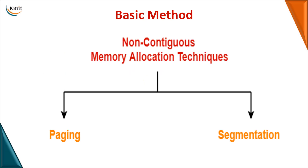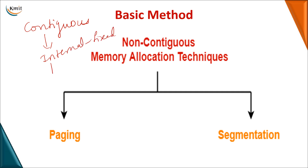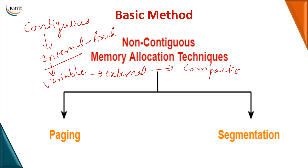In the previous session we covered contiguous memory allocation, which had a problem of internal fragmentation with fixed allocation. To overcome that we tried variable or dynamic allocation, which introduced external fragmentation. Compaction was used to address external fragmentation to some extent, but it had its own limitations. So we found another alternative: non-contiguous memory allocation, where we divide the process and allocate it to memory using a technique known as paging.